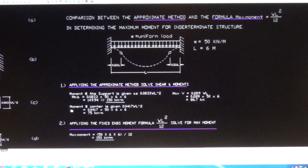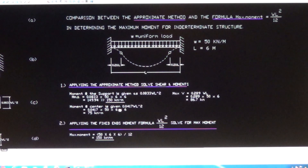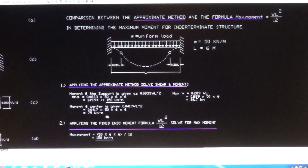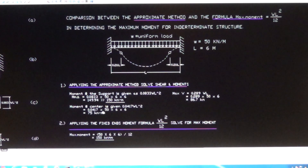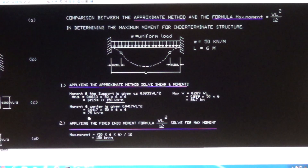At the center of the beam — the mid-span — the moment is given by 0.0417 WL squared. Substituting the values: 0.0417 times 50 times 6 squared gives you 75 kN·m. The mid-span has a smaller moment, and both supports have the maximum moment.